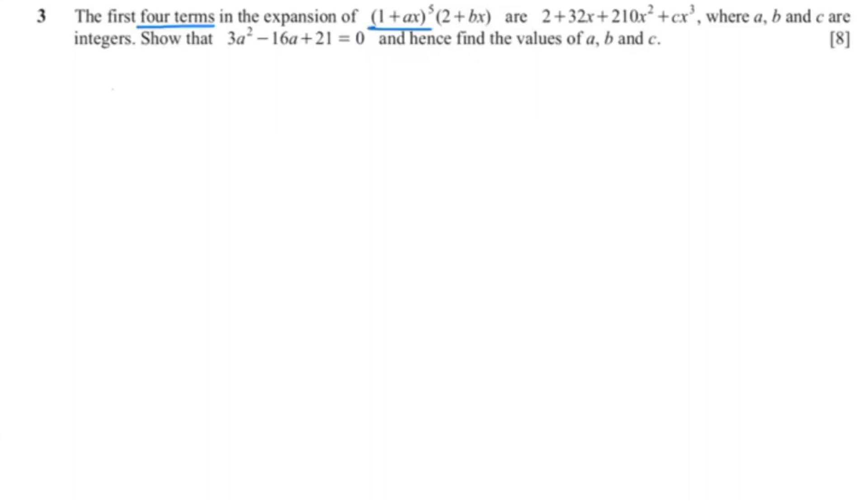So what I'm going to do right now is I'm going to expand (1+ax)^5. So that would be 5C0(1)^5 plus 5C1(1)^4 multiply with ax plus 5C2(1)^3 multiply with ax squared plus 5C3(1)^2 multiply with ax cubed.